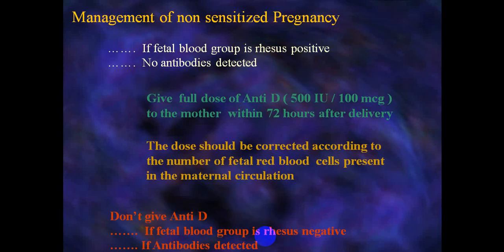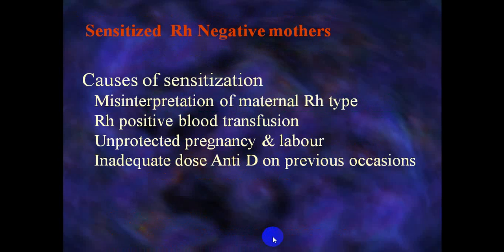If the fetal blood group is RH-positive and no antibody is detected, give a full dose of anti-D to the mother within 72 hours after delivery. The dose should be corrected according to the number of fetal RBCs present in the maternal circulation. Do not give anti-D if the fetal blood group is RH-negative, or if antibody is already detected — indicating the mother is already sensitized.